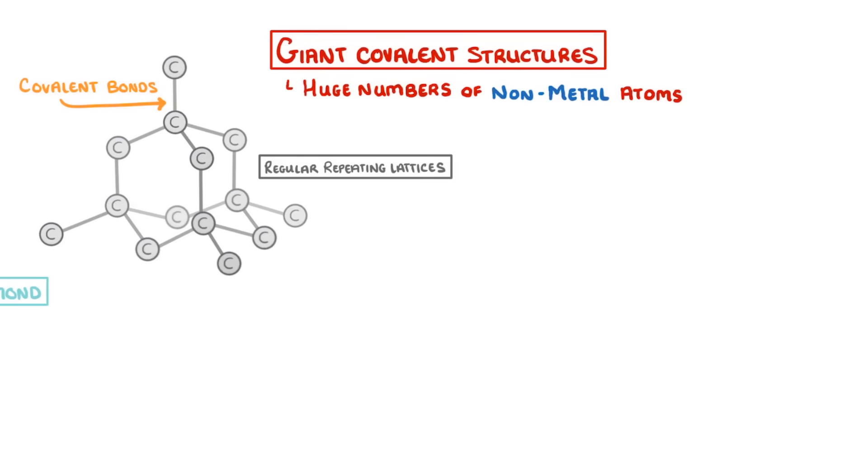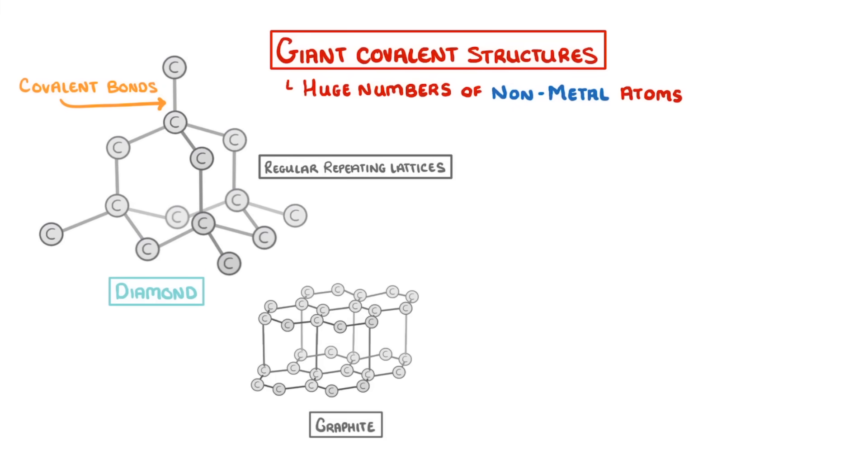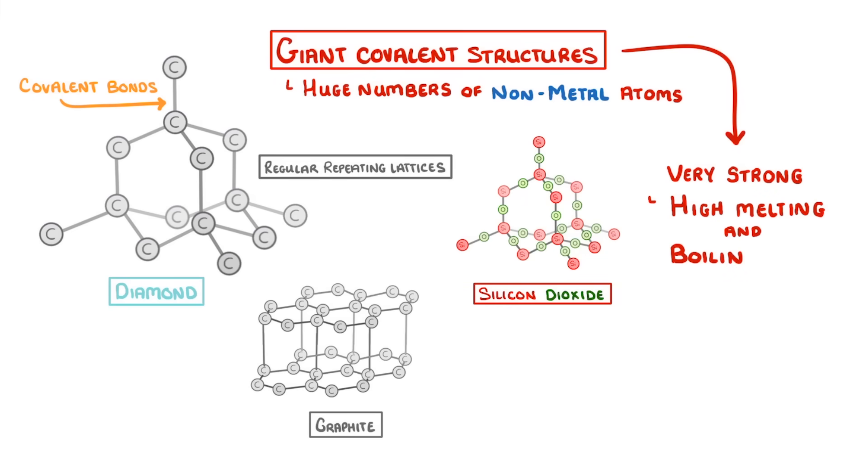The three important examples are diamond, graphite, and silicon dioxide. The main things to remember about these structures is that they're very strong, and they have high melting and boiling points, because we'd have to break all of these strong covalent bonds in order to melt them.